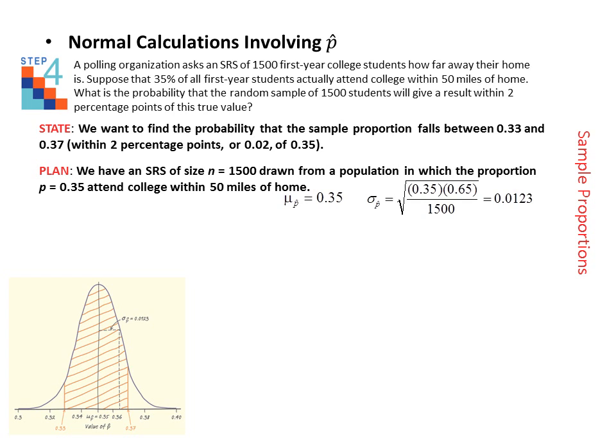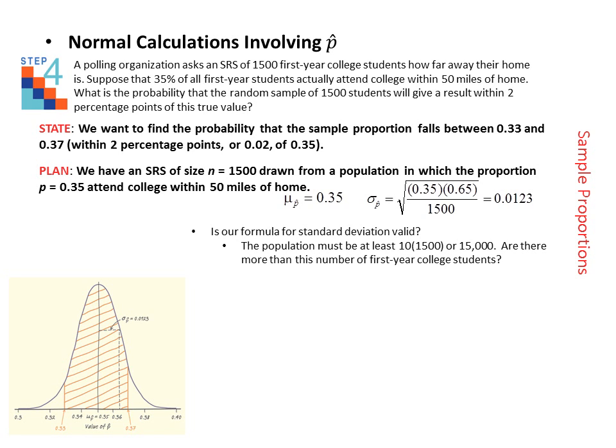And here in the bottom left corner is a drawing of the sampling distribution. You should draw this out whenever you are completing these types of problems. So I will give you some time to do that now if you have not done so already. Next we need to verify some conditions. First of all, we have used this formula for standard deviation, but is it valid? Remember we need the population size to be at least 10 times the sample size in order for this formula to be valid. So that means we need more than 15,000 first year college students. Do you think it is reasonable that we could have that many first year college students? I do.